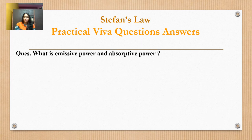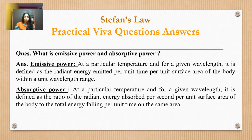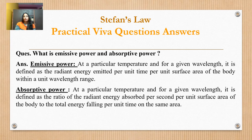What is emissive power and absorptive power? Emissive power: at a particular temperature for a given wavelength, it is defined as the radiant energy emitted per unit time per unit surface area of a body within a unit wavelength range. Absorptive power is the ratio of the total energy absorbed per second per unit surface area of a body to the total energy falling per unit time on the same area.